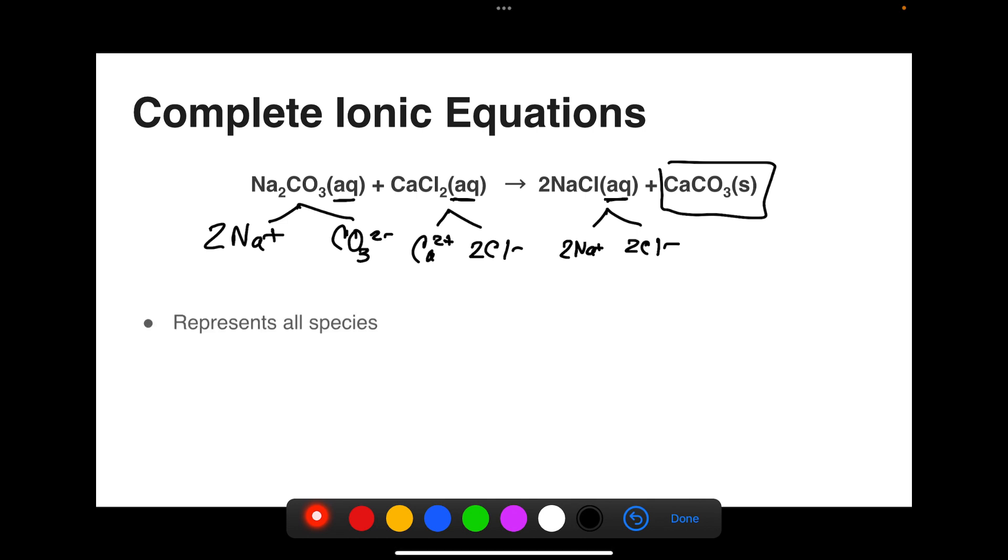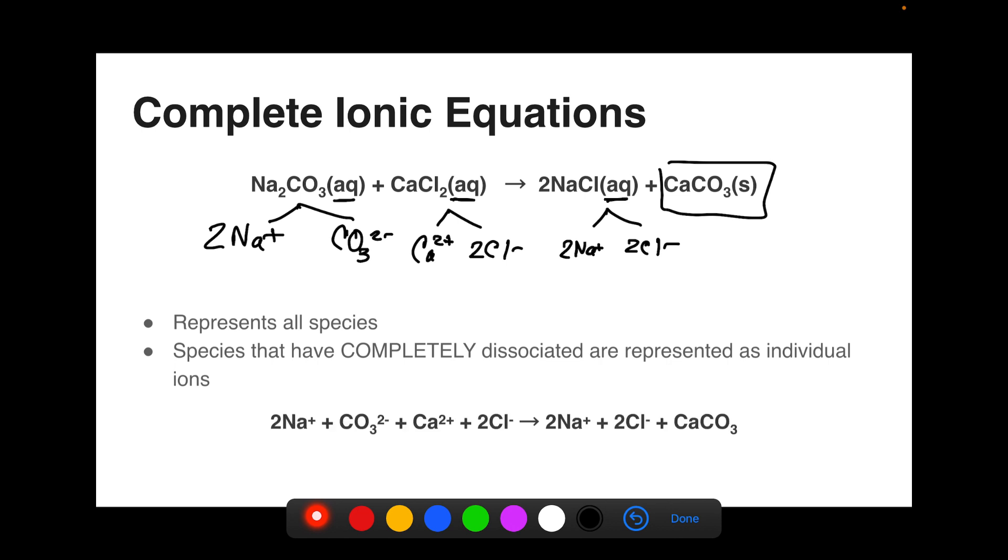So in order to write our complete ionic equation, we still want to represent all species. However, now we're going to represent the ones that have completely dissociated as individual ions. The resulting complete ionic equation is shown below. Notice I've just taken the things that are aqueous and dissociated them into their constituent ions. I've maintained the balancing or the conservation of mass by using my subscripts appropriately as coefficients and by maintaining the coefficient in the products.